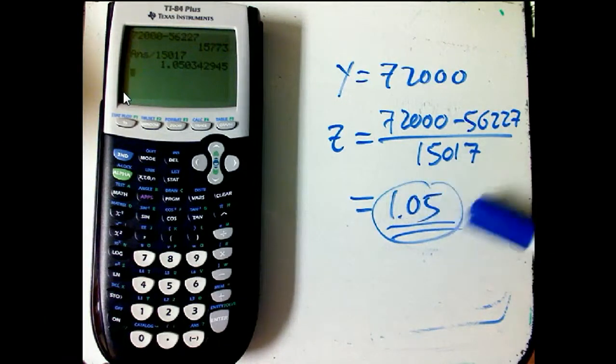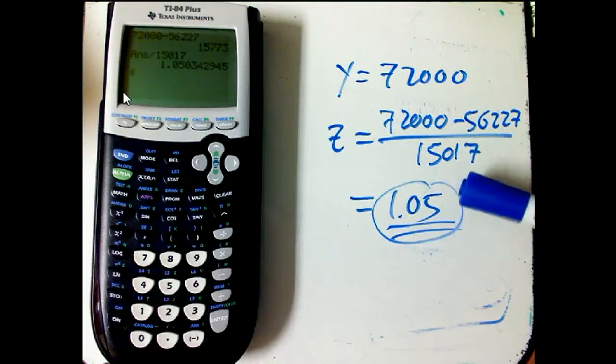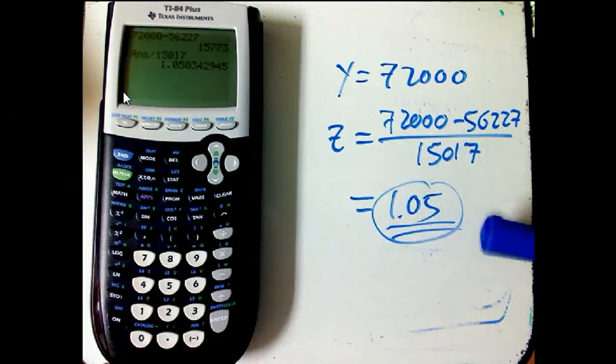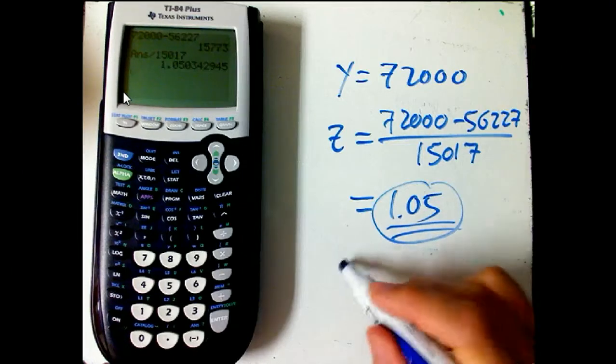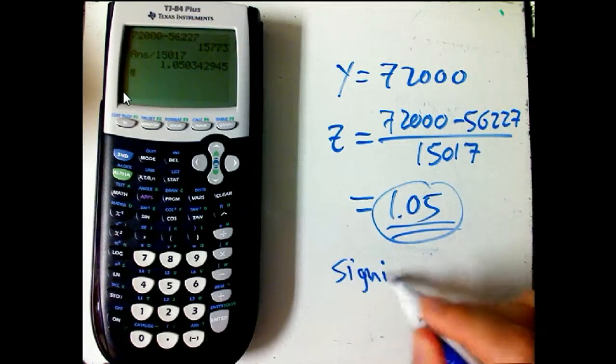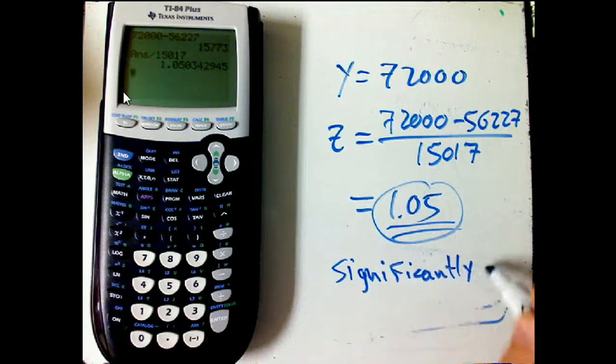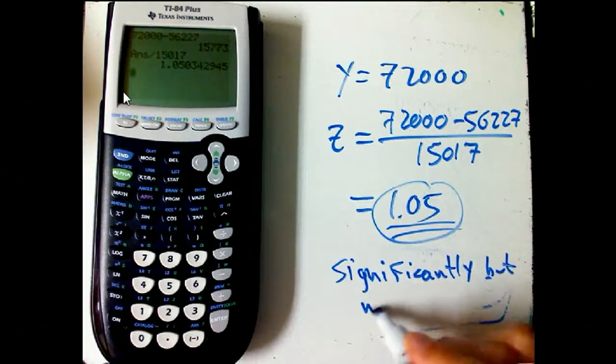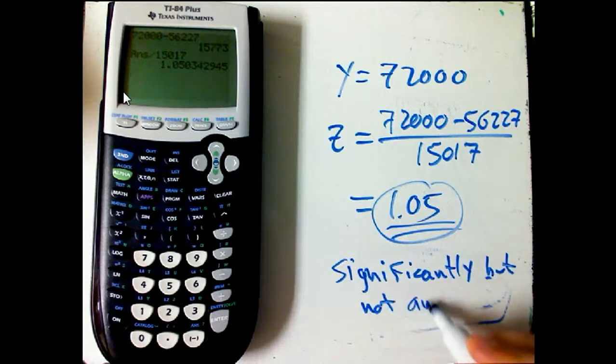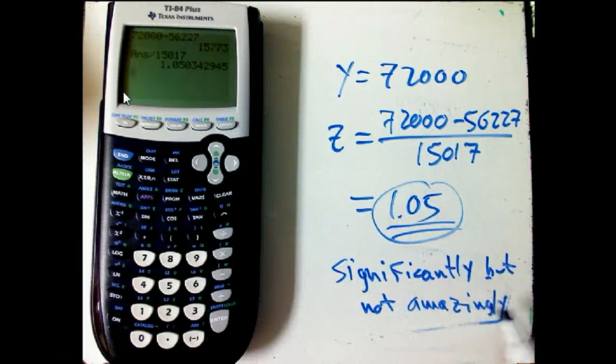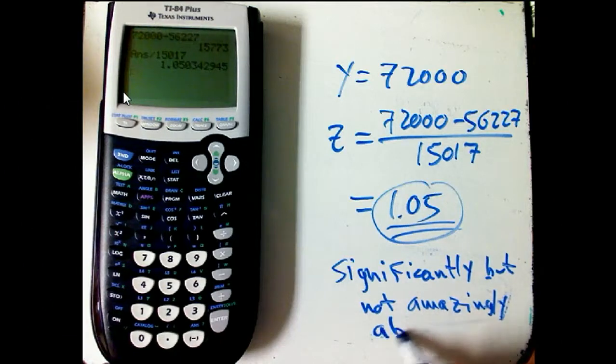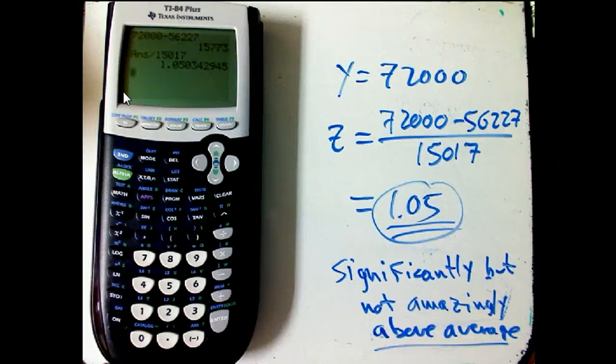For a normal model, we have results like the 68% rule. But for other models, we can't count on those kinds of numbers exactly. But this is definitely, I'd say it's significantly, but not amazingly above average. So we'd probably be pretty happy to find that our salary rate was in that range, but we wouldn't think, oh my gosh, I'm almost the most highly paid employee in the company.